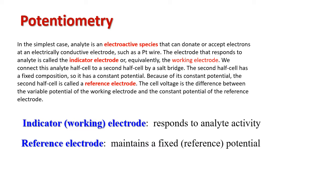This is the electrode that indicates the species that we want to analyze. We connect this analyte half cell to a second half cell by a salt bridge. The second half cell has a fixed composition. As a result, it has constant potential. Because its potential is constant, the second half cell is called a reference electrode.